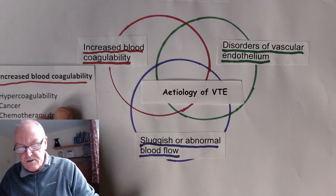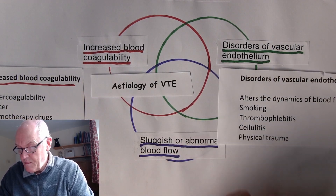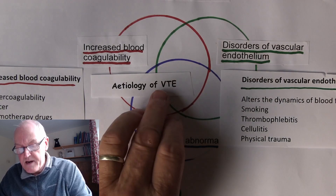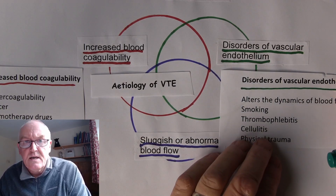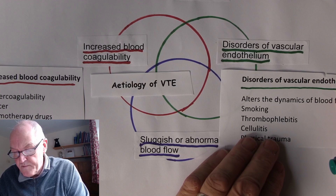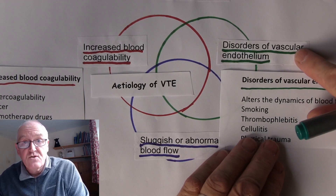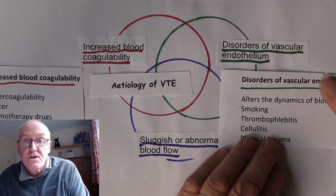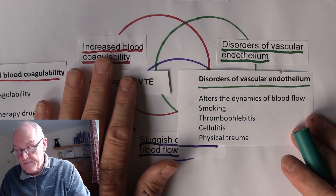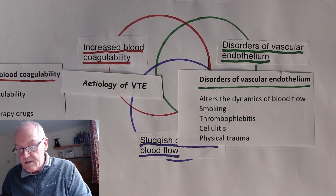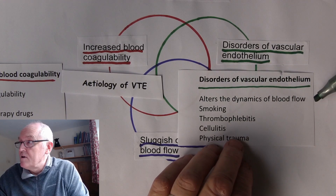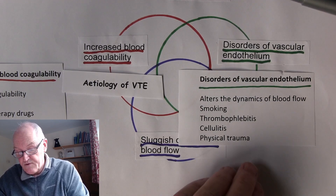Next, let's consider disorders of the vascular endothelium, thinking particularly about disorders in veins since it's venothromboembolism we're discussing. In the arterial system, atheroma is by far the most common cause of thrombus formation, and that is a disorder of the vascular endothelium. But veins don't get atheroma — none at all. Disorders of vascular endothelium in veins can alter the dynamics of blood flow, so the blood can be swirling around obstructions.